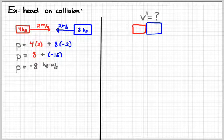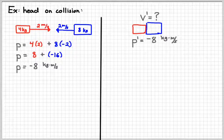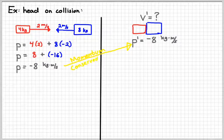And so after these things stick together, we would predict that they're going to go to the left. So this is a closed system. That means the momentum after they collide will be negative eight kilogram meters per second as well, since momentum is conserved.